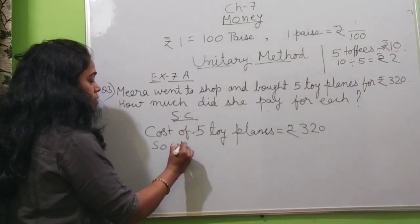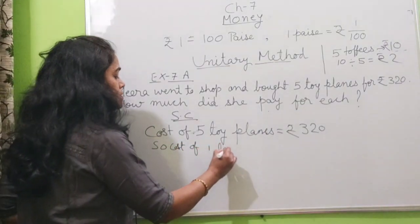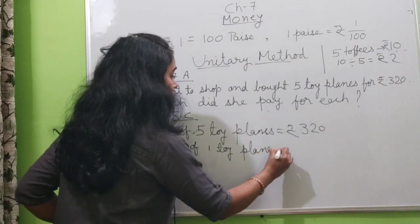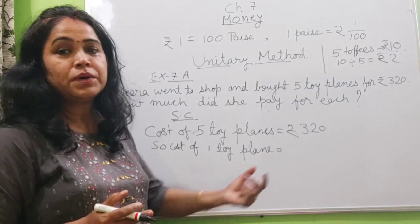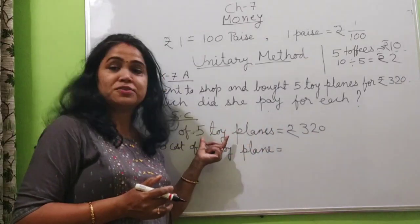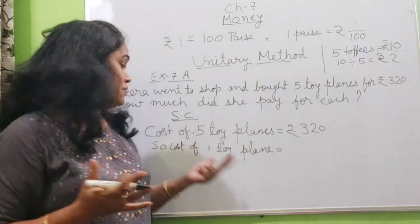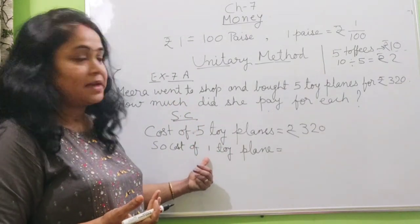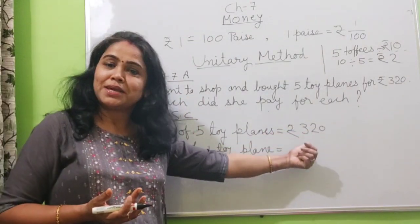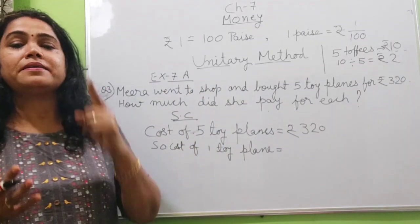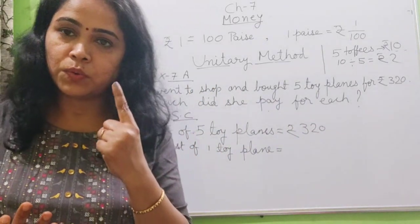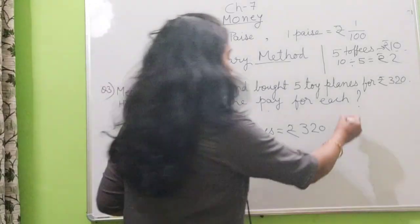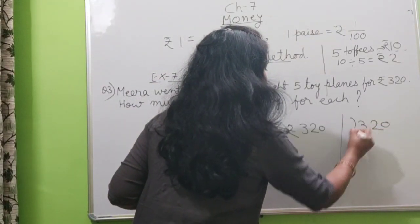So cost of 1 toy plane is equal to? Which operation you will do? Will you multiply these 2? You will get much more number in 1000. So you will give more than 1000 rupees for 1 toy. And for 5 you are paying only 320. So obviously keep in mind that if for 1 you want to know the amount, you will divide. So here you will divide it by 5.